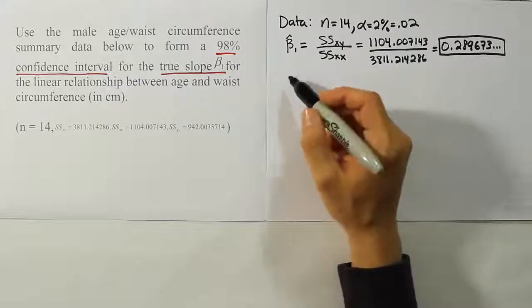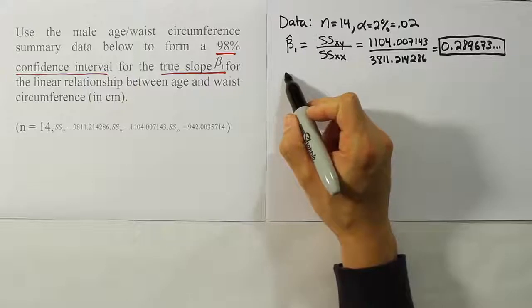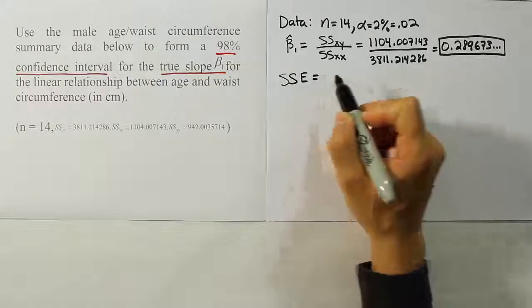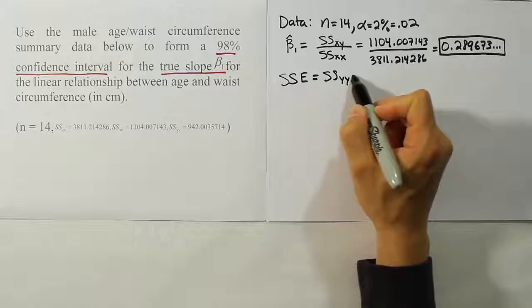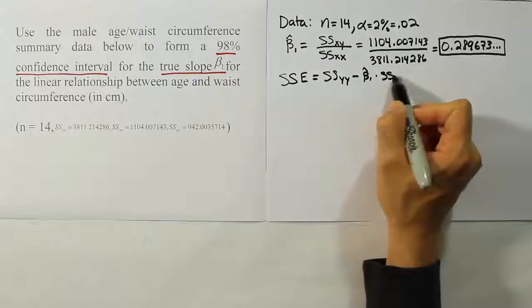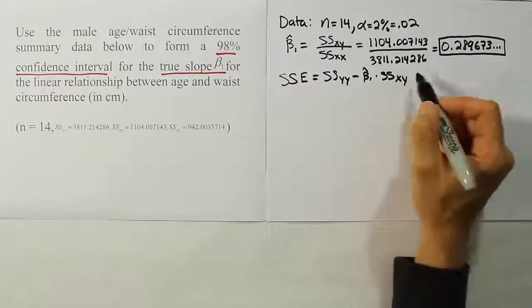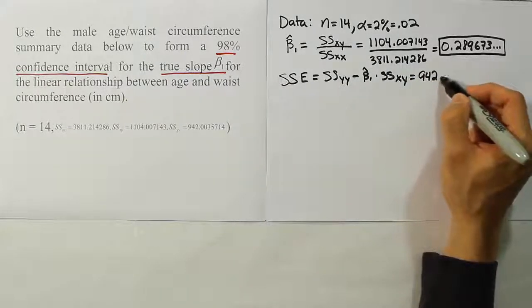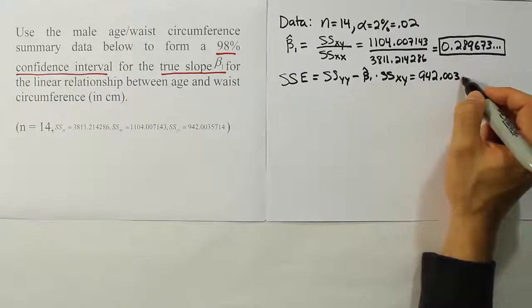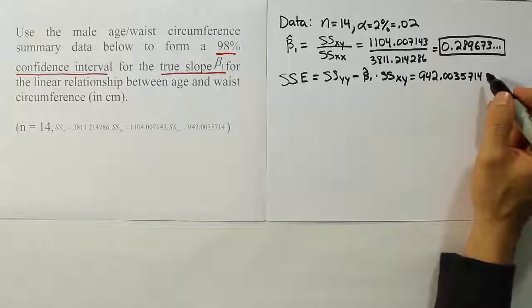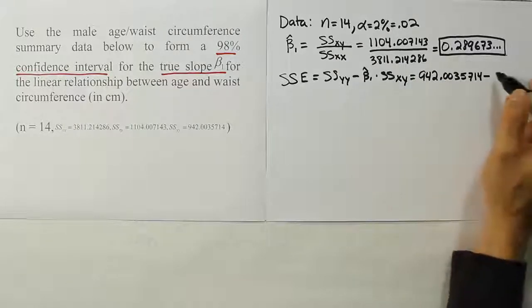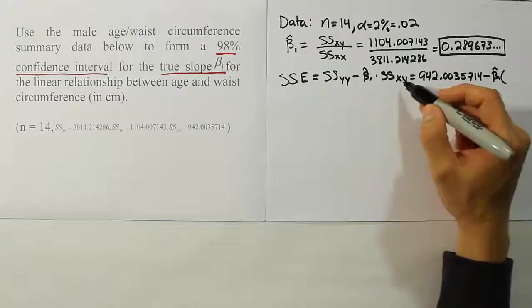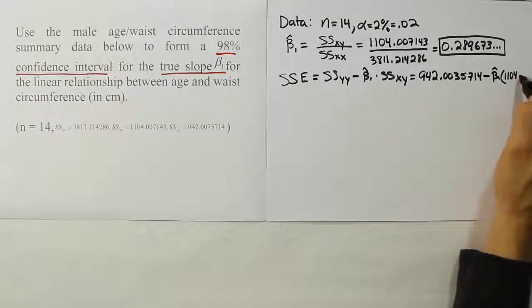At that point, the next step of the process is going to involve calculating the sum of squares for error. That's SSYY minus beta1 hat times SSxy, the mixed term. So, SSYY is 942.0035714. That'll be minus the beta1 value from above, so I'm just going to write it as beta1 hat times the mixed term, which is 1104.007.